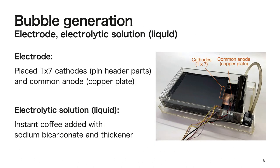Here are the electrodes and liquid required for electrolysis. Only the cathode is used for the display electrode, and 7-pin header parts were placed linearly. The anode is common, and a copper plate was used. As the electrolytic solution, we used instant coffee added with sodium bicarbonate and cornstarch.